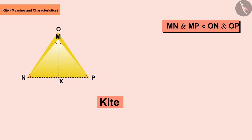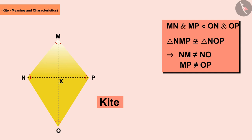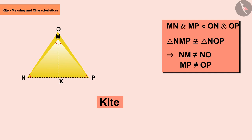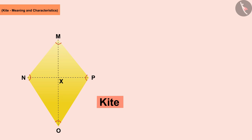If you fold this quadrilateral kite with respect to its diagonal NP, you can see that the triangle MNP is smaller than the triangle NOP — that is, both triangles are not congruent. The corresponding parts of these triangles will not be of equal measure. If you put the top O at the top M, you can see that the measures of these two angles are not the same.